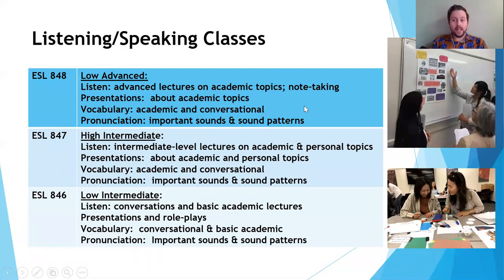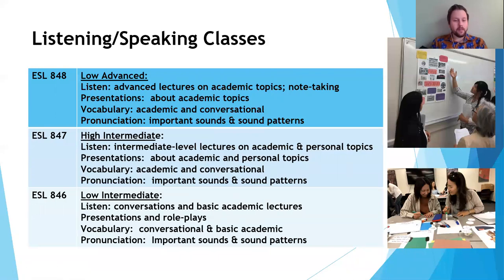Now, our listening and speaking classes. You'll notice we only offer three levels: low intermediate, high intermediate, and low advanced. But this low advanced class is also good for high advanced students, so if you are high advanced, you can also take ESL 848. Many of the skills are similar between each class — just at slightly different levels. In low intermediate, you will learn listening based on conversations and basic academic lectures, do some presentations and role plays, and learn both conversational and basic academic vocabulary.